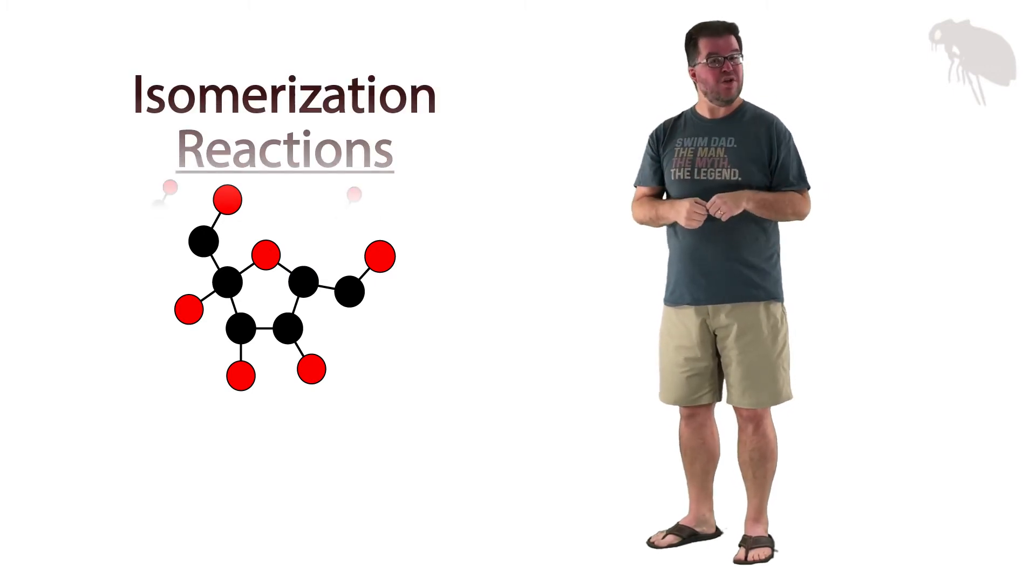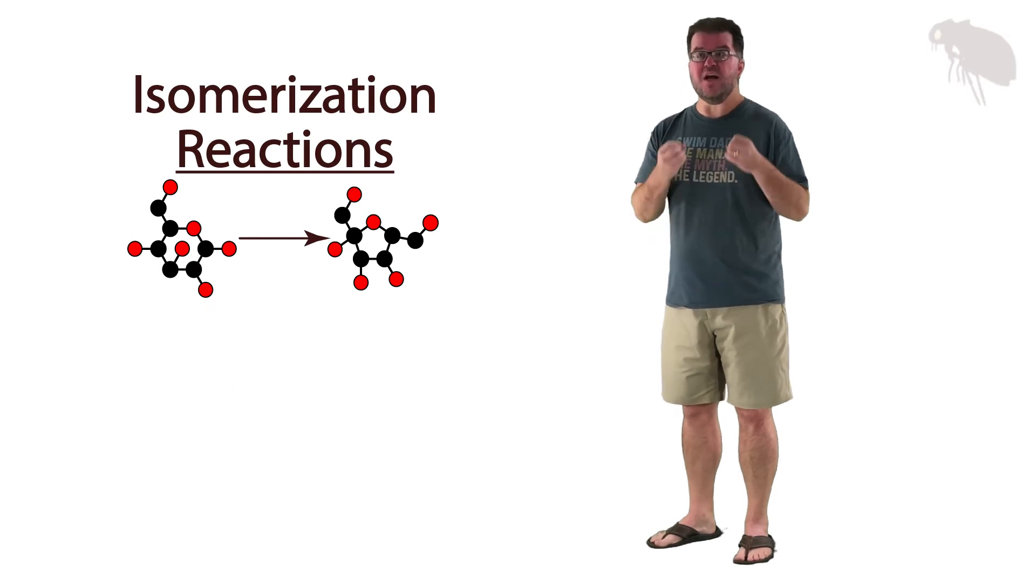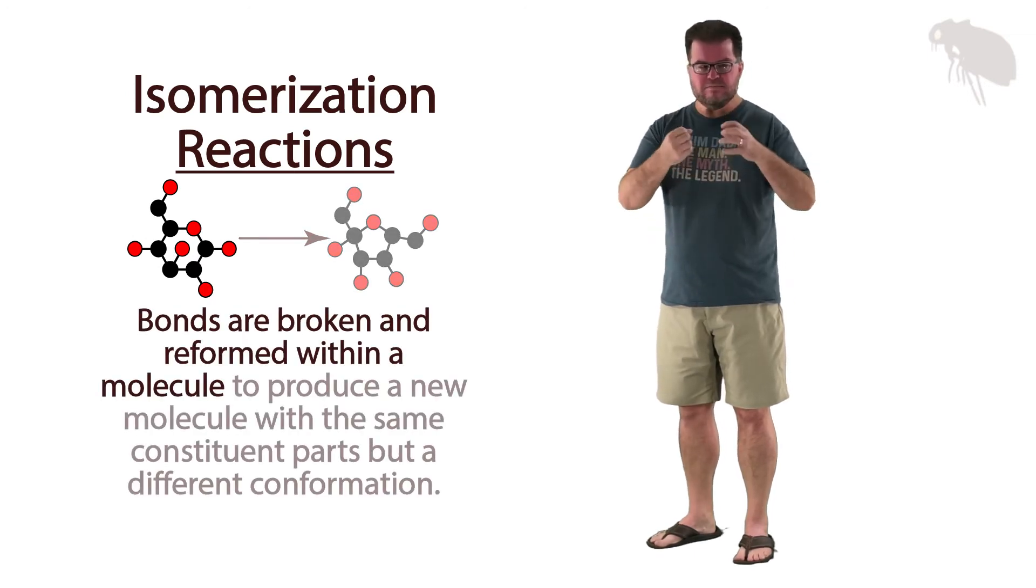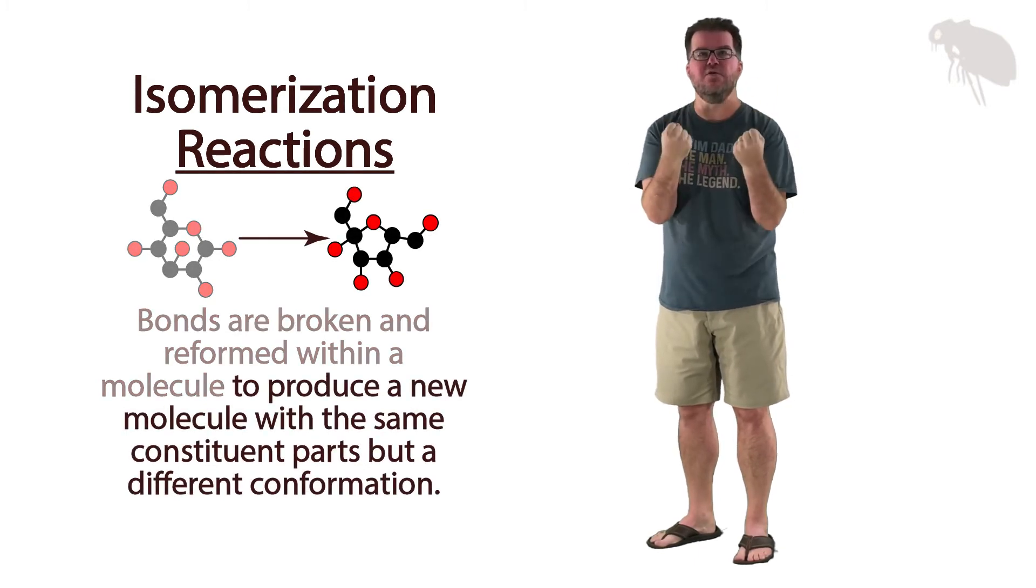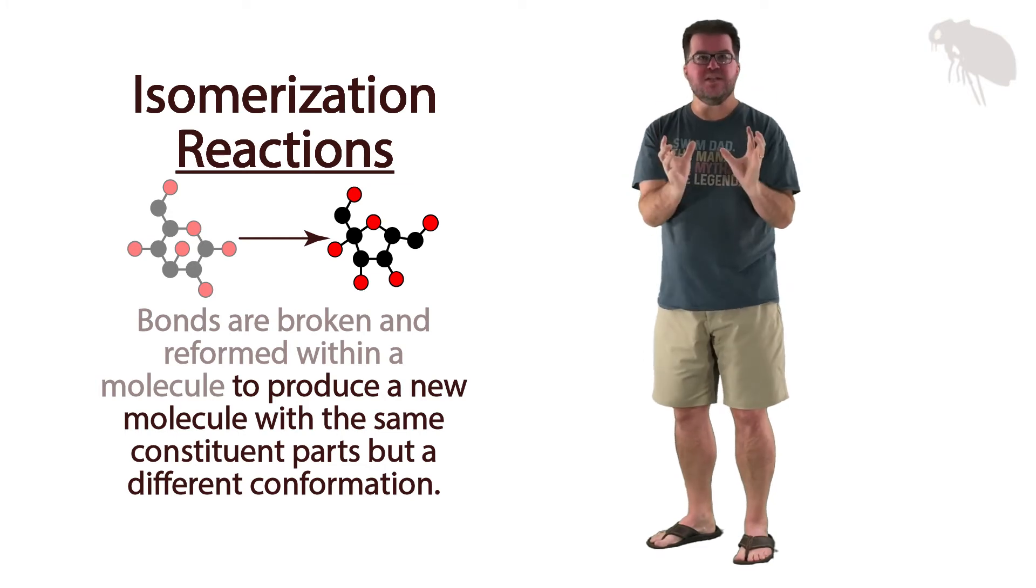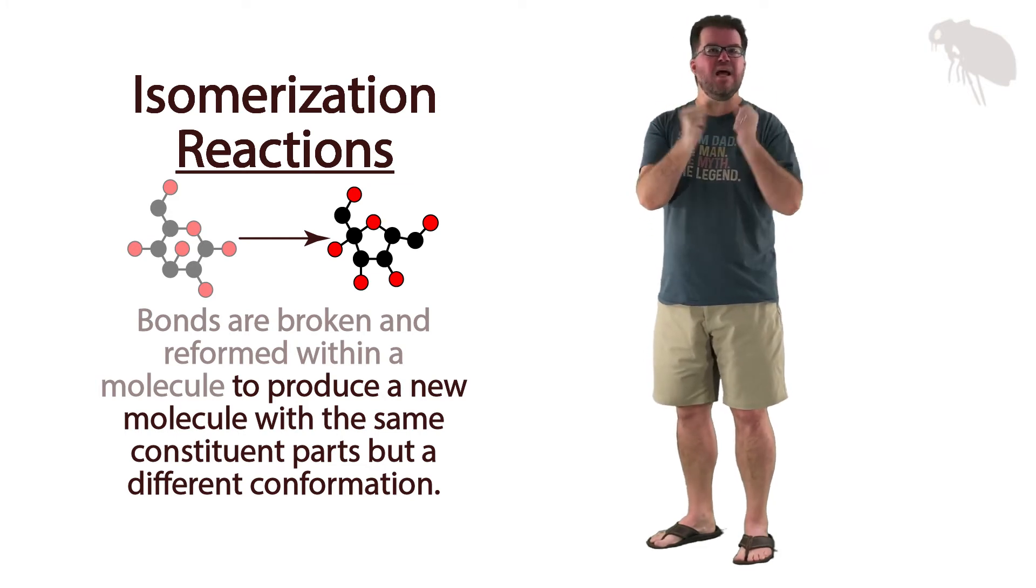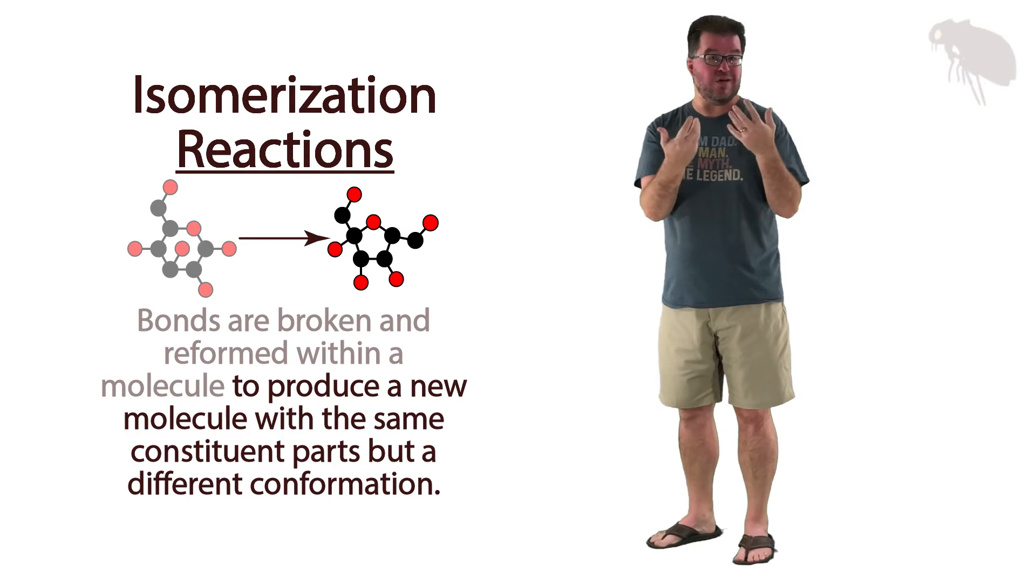What we saw here is what's called an isomerization reaction. A chemical reaction in which bonds are both broken and formed. Decomposition and synthesis occur to rearrange the bonds within a particular molecule to keep the same parts, but put them together in a new way to produce a molecule. It's called an isomer.